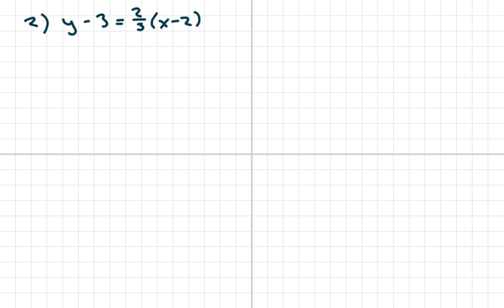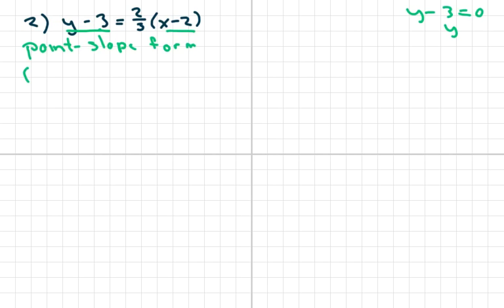The next problem is this one. This one is called point-slope form. I'm going to get my point from the equation. Basically, you set each variable term to 0 to find the values — when you set one part to 0, y is 3; when you set the other to 0, x is 2. So your point is (2, 3). And your slope is m equals 2/3.